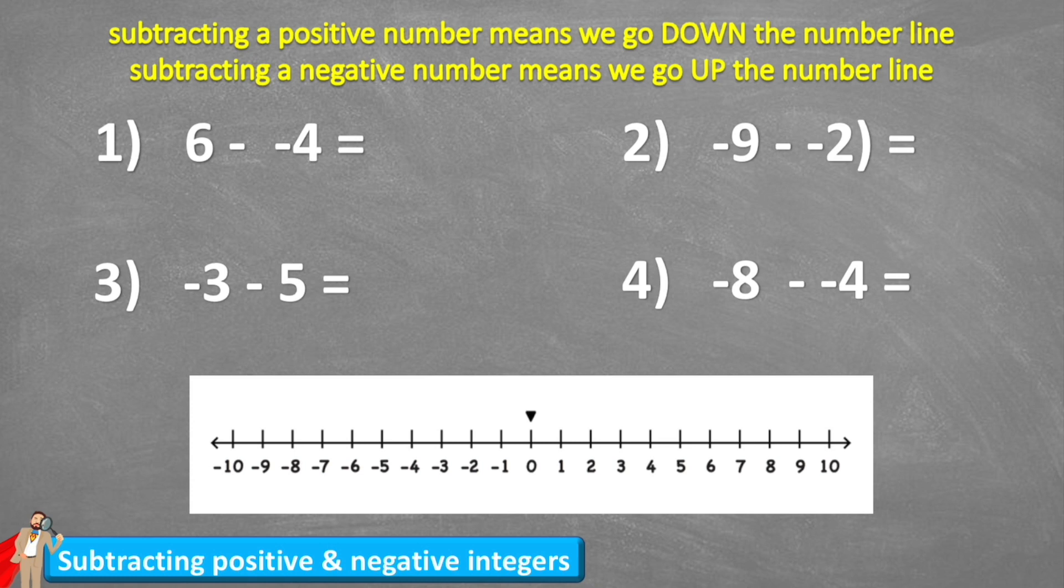Okay, we're going to look at these four questions here today and we're also going to use this number line to help us visualize exactly what we are doing. And we're going to follow these two rules. First one says subtracting a positive number means we go down the number line. That makes sense, doesn't it? If we subtract a normal positive number we will go down the number line. But then it says subtracting a negative number means we will go up the number line. And that's what's going to be a little bit confusing to understand today.